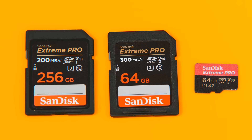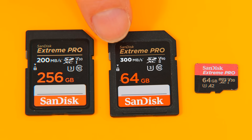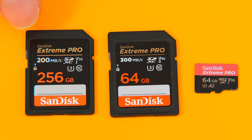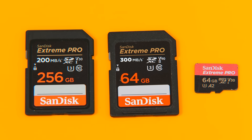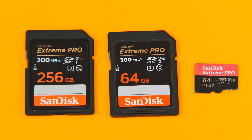In addition to their speed class ratings, the two full-size cards also have a manufacturer-claimed maximum speed printed on them. For the 64 GB UHS-2 card, this is 300 MB/s, which is less than the theoretical maximum of 312 MB/s. For the 256 GB UHS-1 card, the claimed maximum is 200 MB/s — beyond the theoretical maximum of 104 MB/s for UHS-1 — because this card uses SanDisk Quickflow technology. Our micro SD card also uses SanDisk Quickflow.